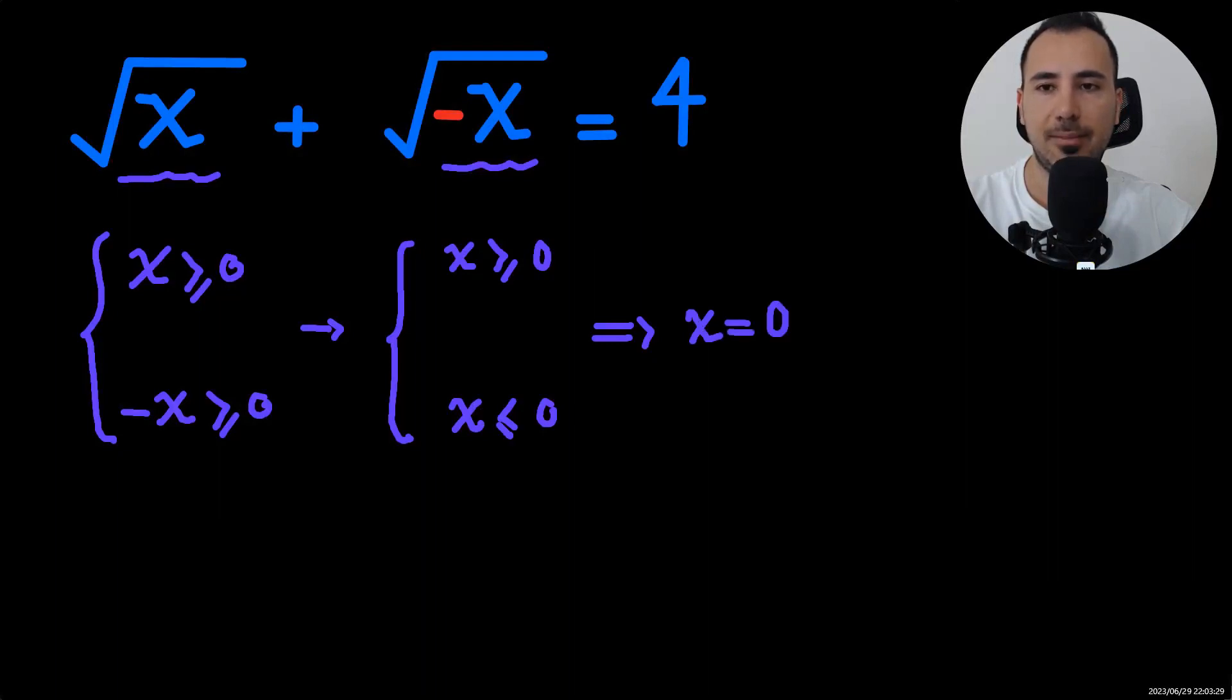And if you plug in the value of this into the left-hand expression, you see that it's going to be 0, which is not equal to 4. So that's definitely wrong. So we can conclude there are no solutions.